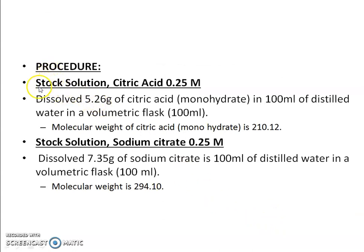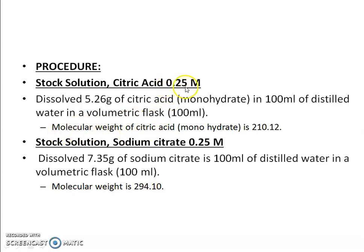Coming to the procedure: first, we have to prepare citric acid at 0.25 molar. For that, dissolve 5.26 grams of citric acid monohydrate in 100 ml of a volumetric flask and dilute to 100 ml with distilled water. The molecular weight used for this calculation is 210.12.